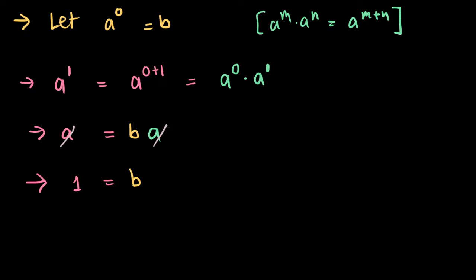But we know that b equals a to the power of zero, and what this means is that we have done our proof.